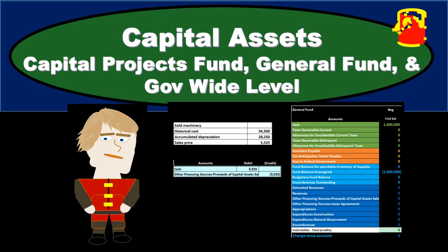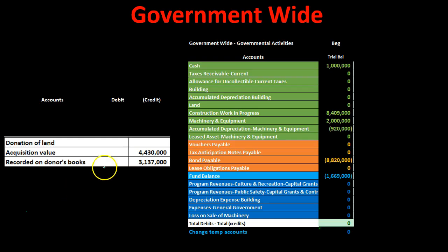We will work an example problem related to the capital projects fund, the general fund, and the government-wide activities, focusing on different types of capital assets. After recording government-wide activity on an accrual basis, we'll look at the related fund accounts on a modified accrual basis. This lets us compare and contrast government-wide accrual accounting with modified accrual fund accounting for governmental-type funds.